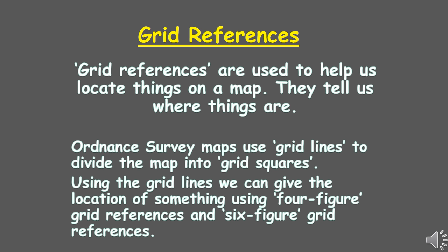The basic purpose of a grid reference is to locate things on a map. They tell us where something is. On the Ordnance Survey maps we use these imaginary lines which we call grid lines and they divide the map into grid squares. These lines can give us a location of something either using a four-figure reference or a six-figure reference.